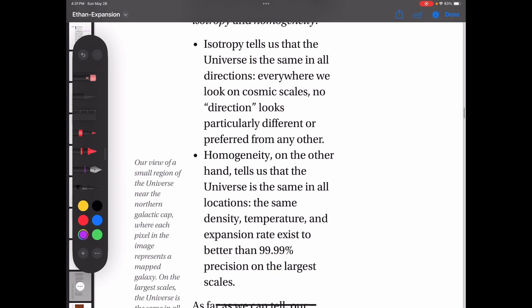This section talks about isotropy and homogeneity. So isotropy tells us that the universe is the same in all directions. Everywhere we look on cosmic scales, no direction looks particularly different or preferred from any other. And this is very obvious in the point potential universe because we're using the same physics everywhere. If we're producing new spacetime ether in supermassive black holes, that ether emits, it reacts, it dissipates energy, it inflates, and then it expands.